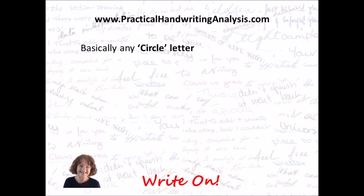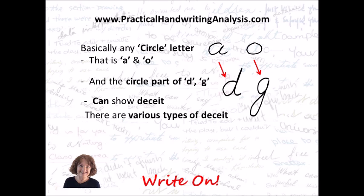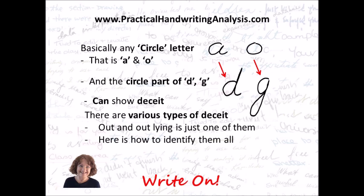Basically, any circle letter — an A, an O, and the circle part of a D or a G — can show deceit. However, there are various types of deceit, and out-and-out lying is just one of them. Here's how to identify them all.